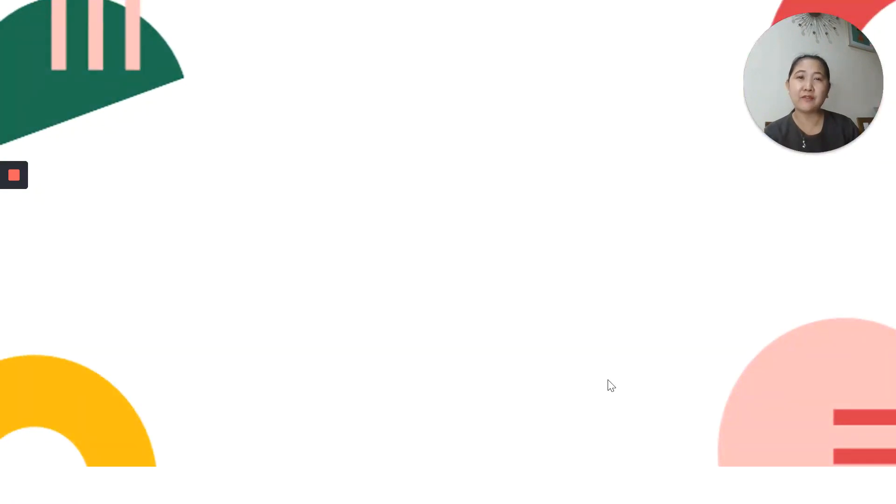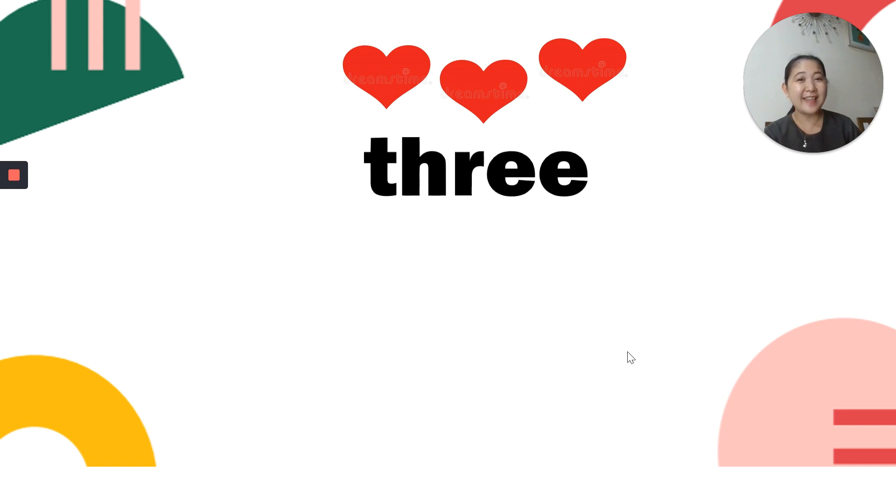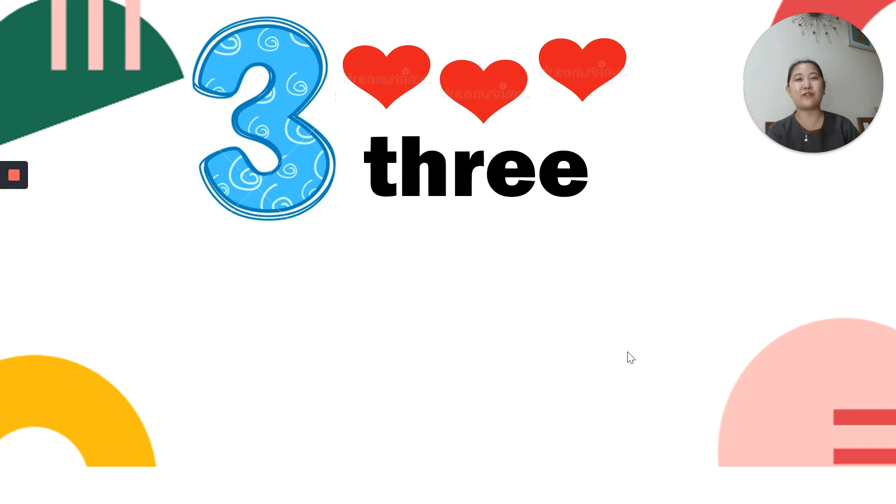Now what number is next after 2? Great! I know what's on your mind. Let's see if it's correct. Count number of hearts. Count with me. 1, 2, 3. Right. 3 is next. Right after 2 is 3. That's the symbol for 3.